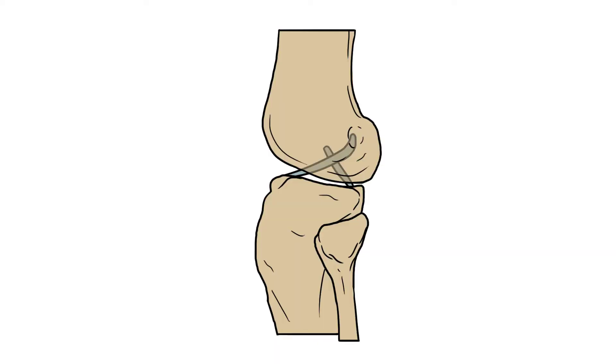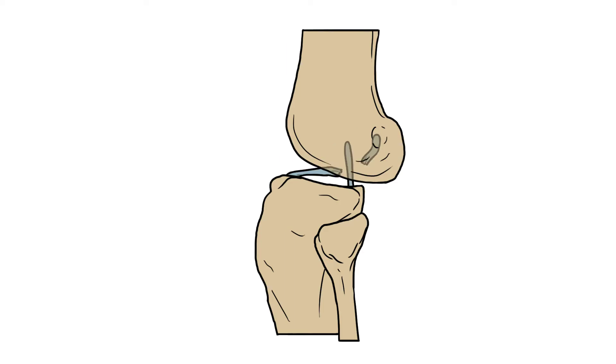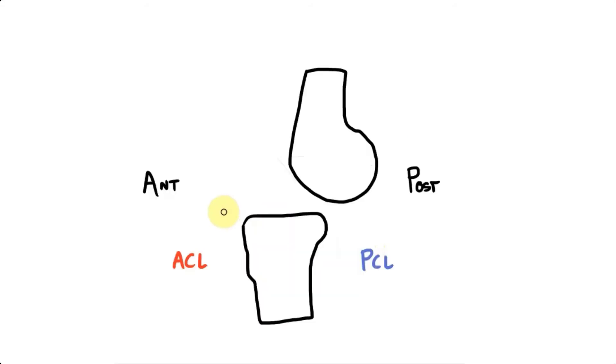If a ligament is stretched by a movement, its normal function is to resist that movement. But if it's stretched too far or too forcefully, then it can tear. Remember these ligaments are named after their tibial attachment, so the ACL will be here and the PCL will run here. Now if all has gone well, it should be clear which ligament has been stretched and damaged — in this case, the ACL.